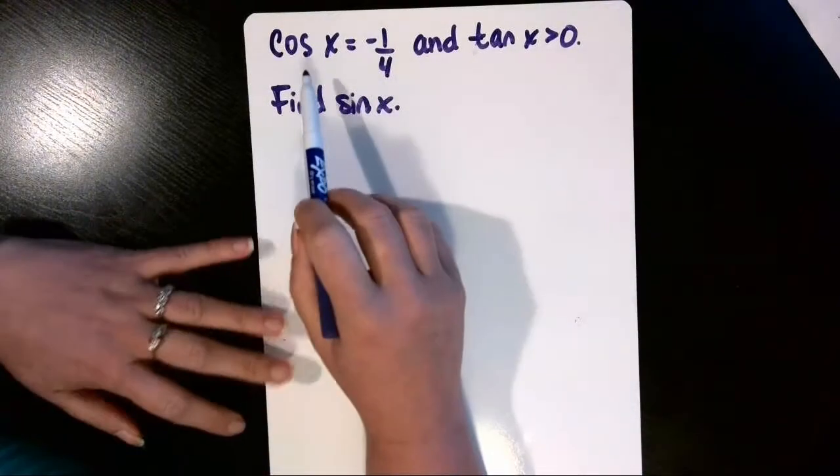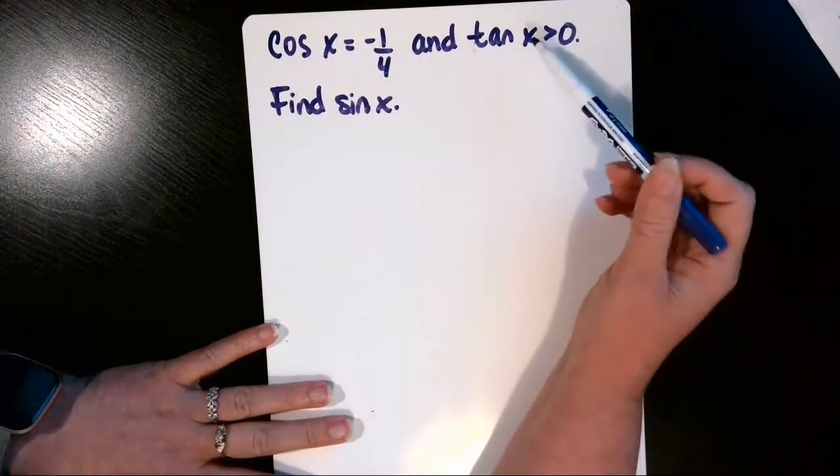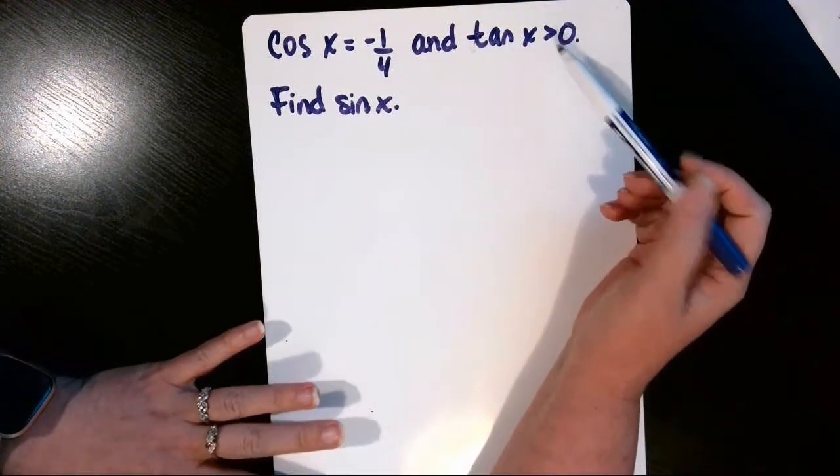Okay, in this example we're given that the cosine of X is equal to negative 1 fourth and the tangent of X is positive.